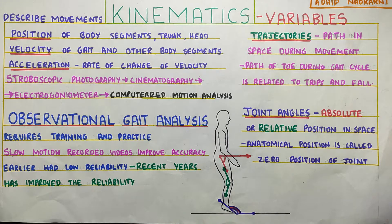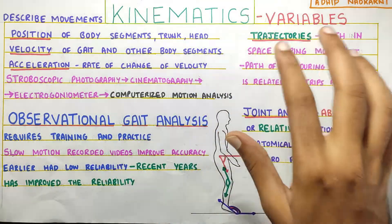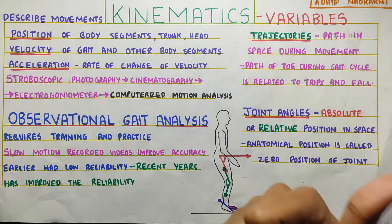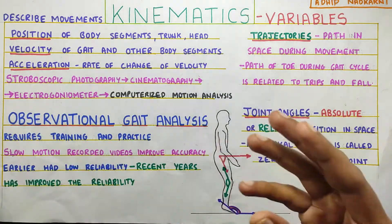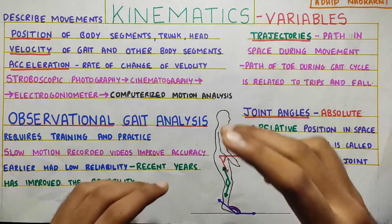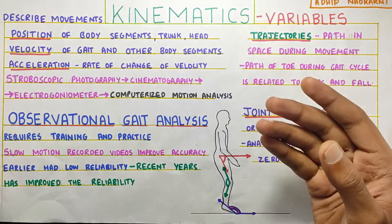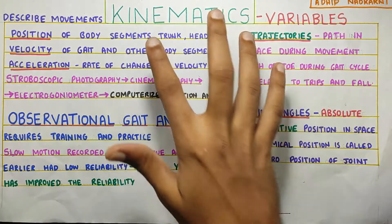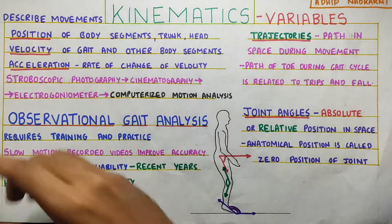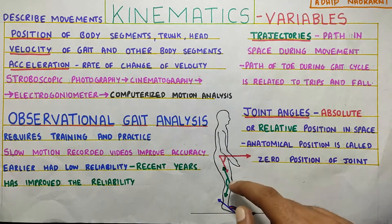In this video we are going to talk about the kinematics variables. The previous video we talked about the variables of time and distance, which was basically telling us the different parameters by which we can analyze the gait - like your step length and then the step duration, all those things. So now in this video we will take kinematics variables. That is basically the position, velocity of the movement, acceleration of the movement, the joint angles.